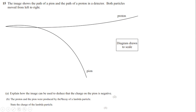Explain how the image can be used to deduce that the charge on the pion is negative. Both particles — the proton and pion — are moving rightward in the detector, so we have a magnetic field in the detector. When these charges move in the magnetic field they follow a curved path, meaning they experience a magnetic force. That's why the pion must have a charge — if the pion were neutral, it would move straight without curvature and would not be detected.